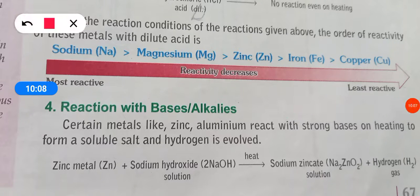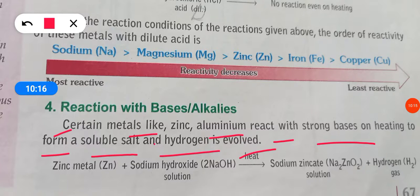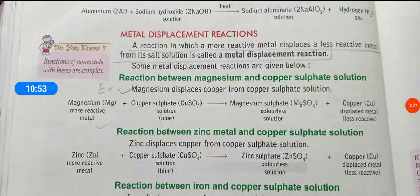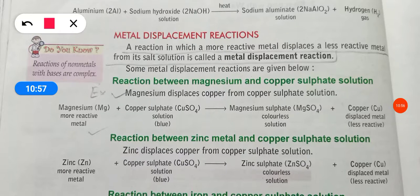Reaction with bases and alkalis: certain metals like zinc and aluminium react with strong bases on heating to form a soluble salt and hydrogen gas is evolved. For example, zinc metal plus sodium hydroxide solution gives sodium zincate plus hydrogen.